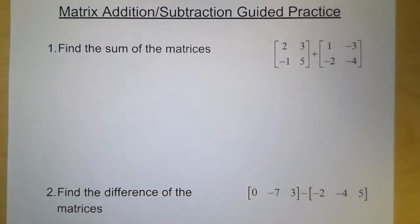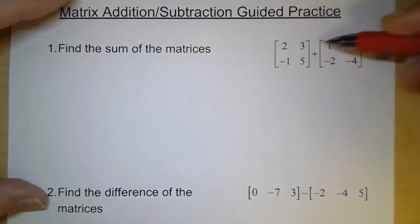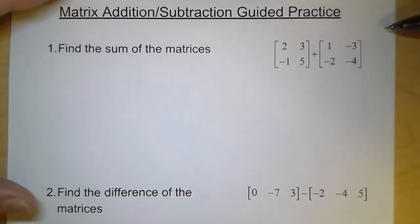Now we've already talked about matrix order, that is rows and columns, and now we can start putting matrices together with addition and subtraction. The main thing with addition and subtraction is that the matrices have to be of the same order, that is the same number of rows and the same number of columns.